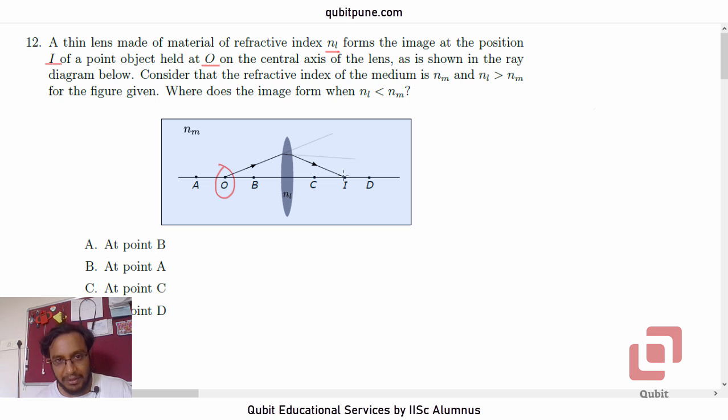one ray of light is shown, gets refracted twice, comes to I.